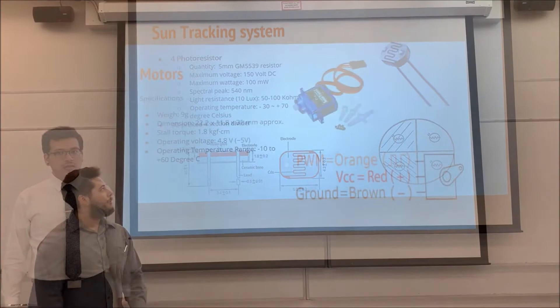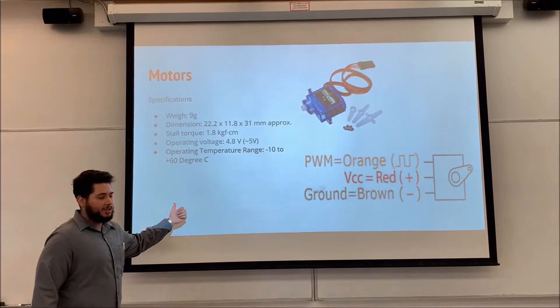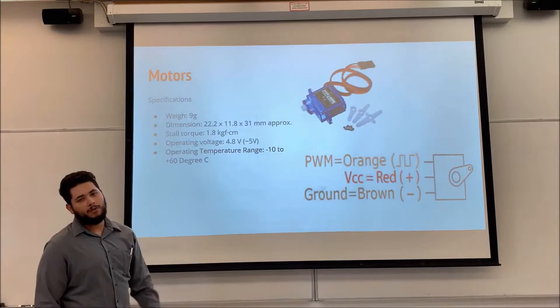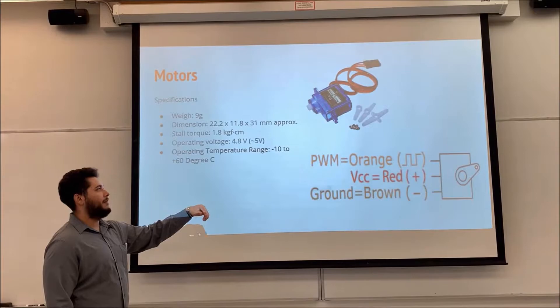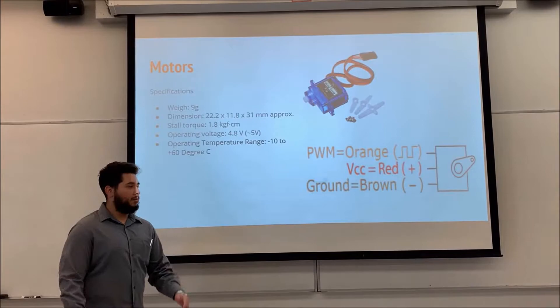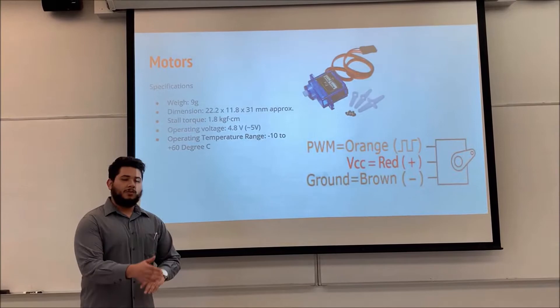For the motor part, we're going to be using a micro servo motor. These are the specifications. As you can see, the orange panel is where the PWM is going to go into the motor. And then we're going to have a power source red and brown to power the motor. And then the stall torque for the mini servo motor is at around 1.8 kilograms.